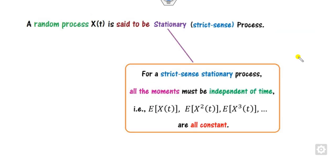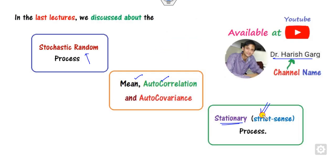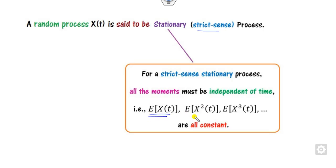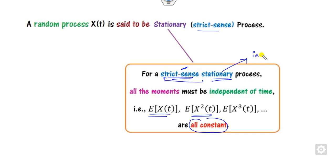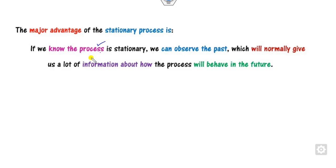In this lecture we will see another kind of stationary process. First, let us define the strict sense stationary process: if you find the expected values of x, x squared, x cubed and all are constant, then we call it strict sense stationary. The meaning of stationarity is that the process is independent of time — whatever you observed in the past will behave the same in the future.